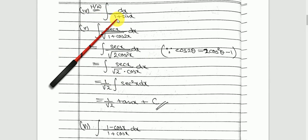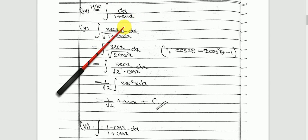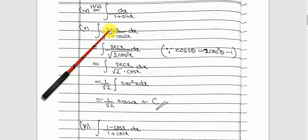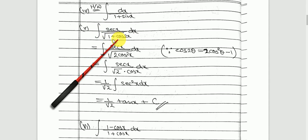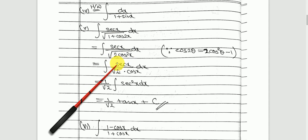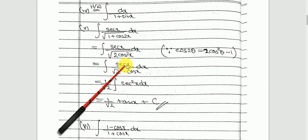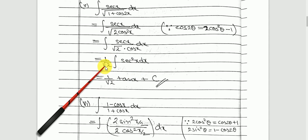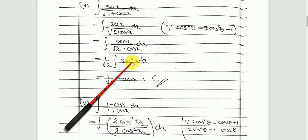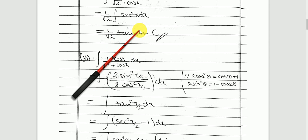This next one is homework — use rationalization as above and you will be able to do it. Next, integrate sec x upon square root of 1 plus cos 2x. Here 1 plus cos 2x can be written as 2 times cos squared x, so the square root gives root 2 times cos x. This becomes 1 upon root 2 times the integration of sec squared x, and you know that integration — just write the value and you will get the answer.